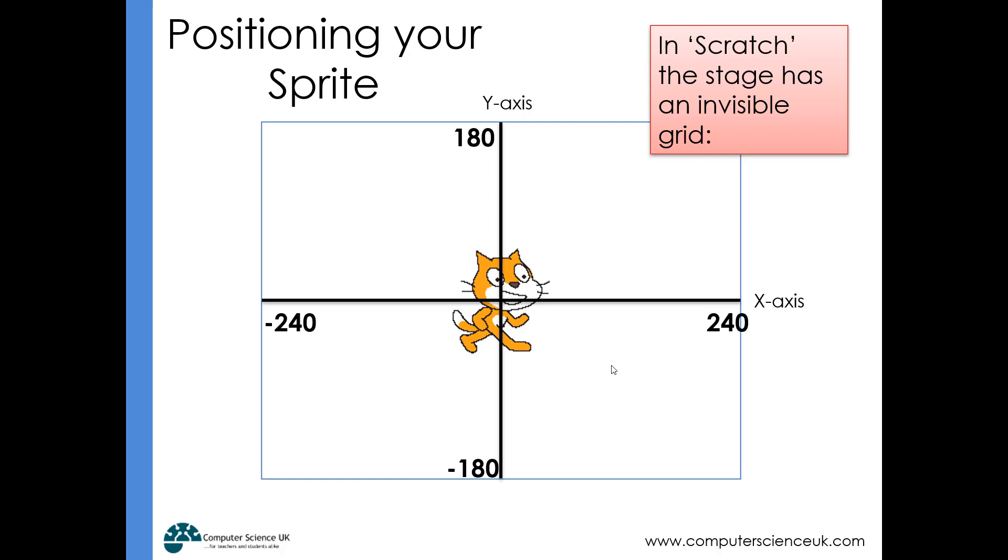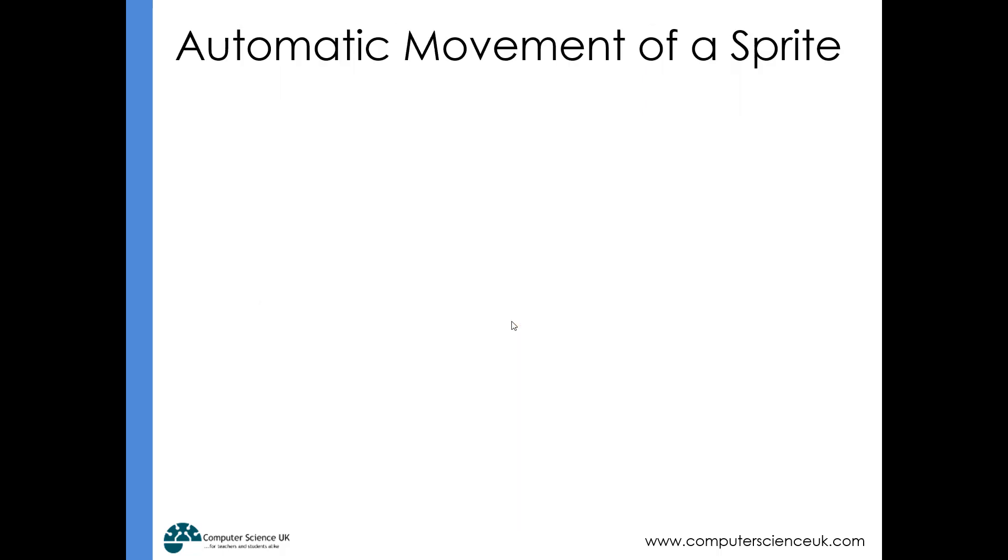To program automatic movement, it's important to understand the coordinate system in Scratch. On the canvas, sprites' positions are recorded as coordinates. If you've got a sprite dead center, their coordinate is zero on the x-axis and zero on the y-axis. At the moment, the cat is at position (0, 0). If the cat moves to the right side and is positioned here, its y position continues to be zero because it hasn't moved up or down, but its x coordinate would be much higher—perhaps 200, 230, or 240. We need awareness of this invisible grid in the background—we use a coordinate system to position our sprites.